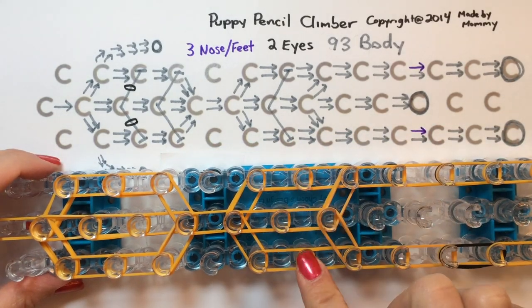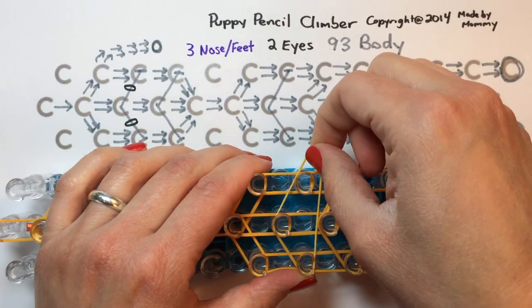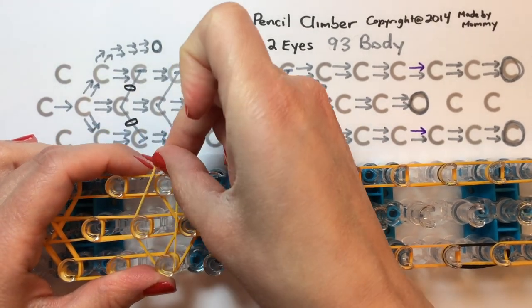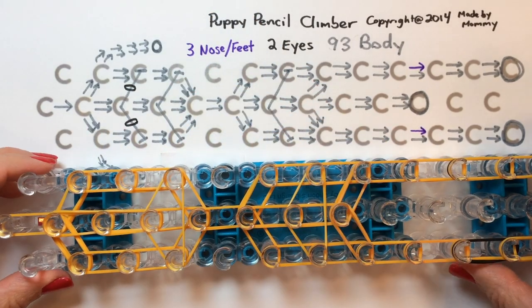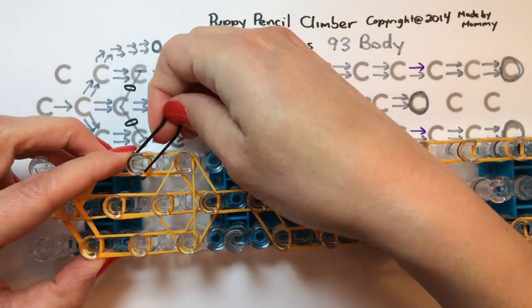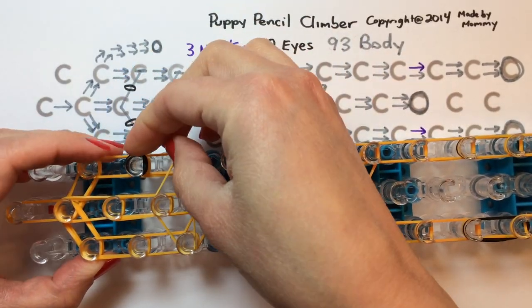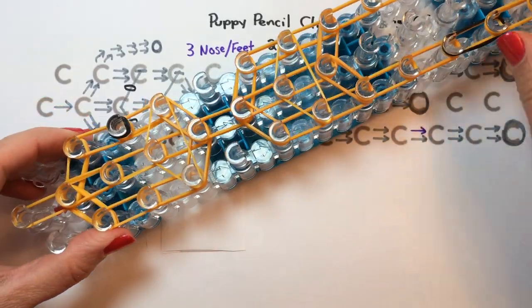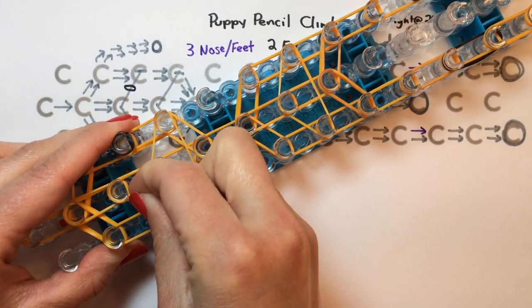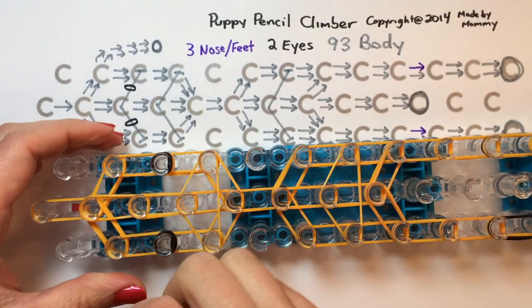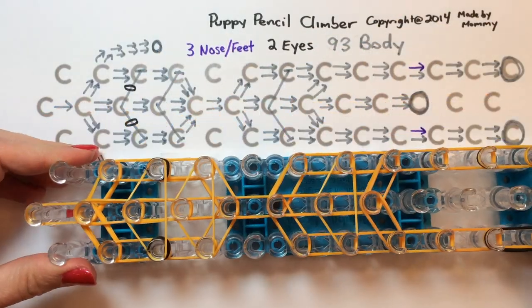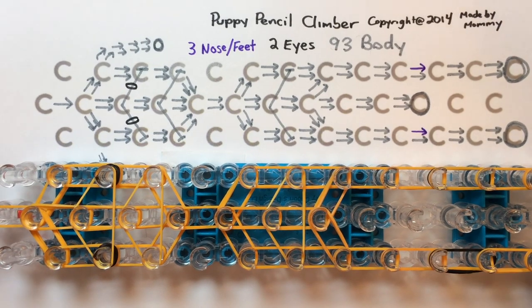Now we need a triangle band across these three for the center of the body, and a triangle band here for the center of the body, and a triangle band here for the bottom of the face. And then we need to add the eyes onto this peg and this peg. Take a single band and wrap it around three times, and do that here as well. Then take another single triangle band across these three. And we've now placed all the rubber bands that are on the chart.